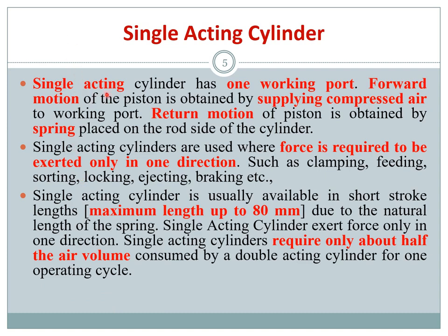A single acting cylinder has one working port — compressed air enters at one particular side and the return motion is controlled by the spring. Forward motion is obtained by supplying compressed air, which extends the cylinder. Once pressure is removed, the spring returns the piston to its original position.